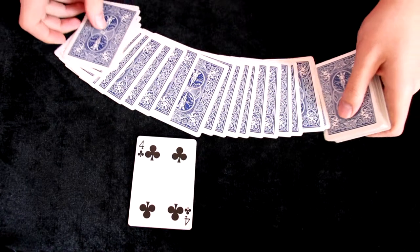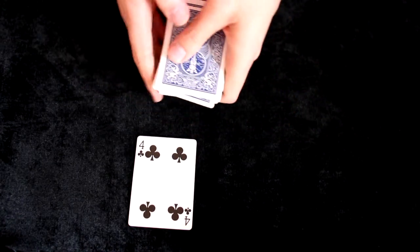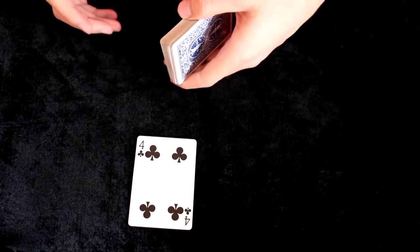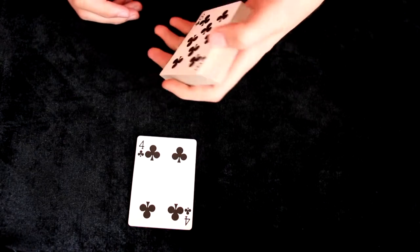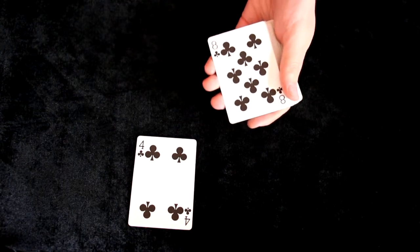I will now square up the deck and when I am squaring it I will secretly look for a moment what the bottom card is. So in this case it would be eight of clubs.